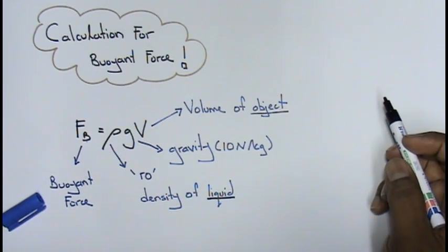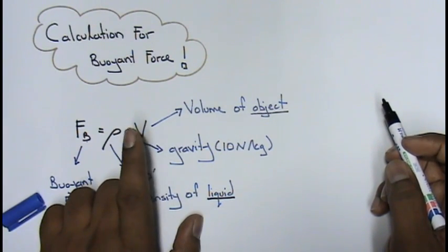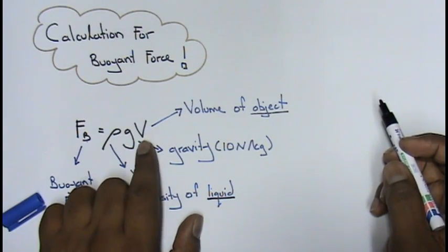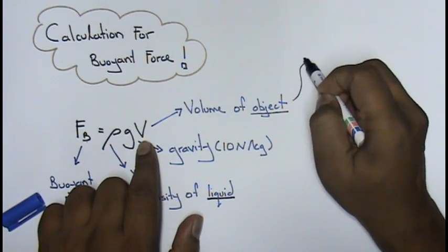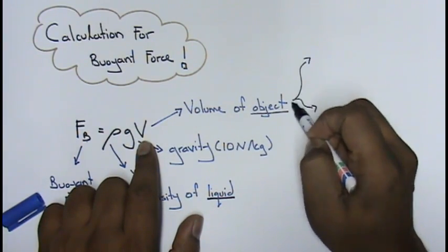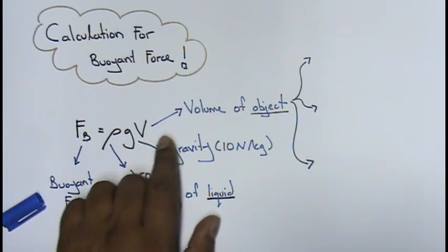Now students, my concern is your V. Normally how your V over here is given in exam is volume of object. I can test you over here using three methods, which I want you to hear very carefully.